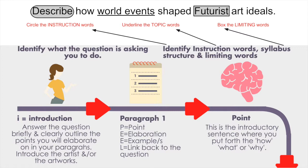You'll notice there's also an infographic that you can use over and over again as you get used to this scaffold. Once you've identified what the question is asking you to do, you then need to get into actually answering the question. You start off with an introduction — I equals introduction. In your introduction, you answer the question briefly and clearly outline the points you will elaborate on in your paragraphs. If the question allows for it, you also introduce the artist and the artworks you'll be referring to in the body of your essay.